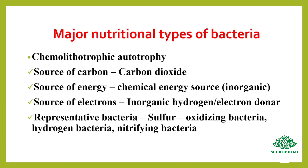Chemolithoautotrophy: here the source of carbon is carbon dioxide, the energy source is chemical energy from inorganic sources, and the source of electrons is inorganic hydrogen or electron donors. Bacteria in this group include sulfur-oxidizing bacteria, hydrogen bacteria, and nitrifying bacteria.